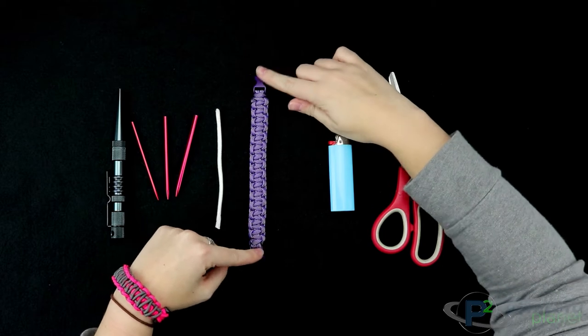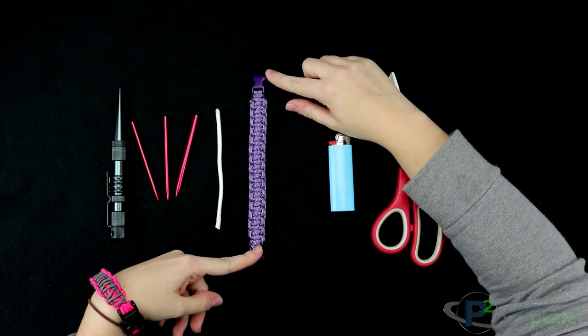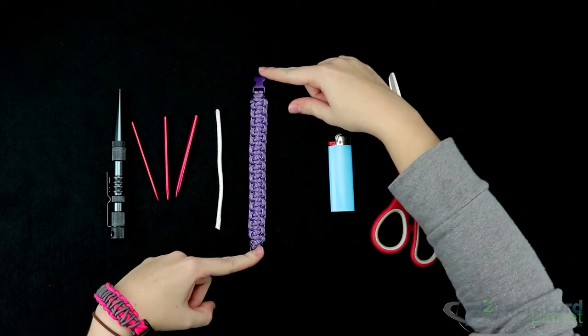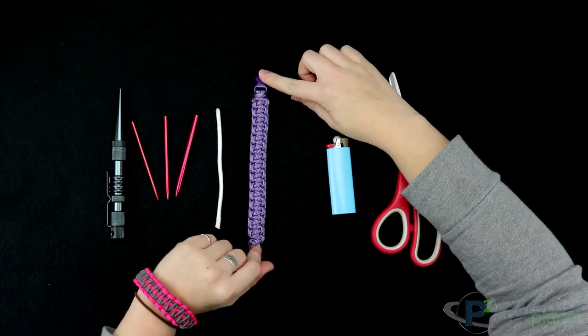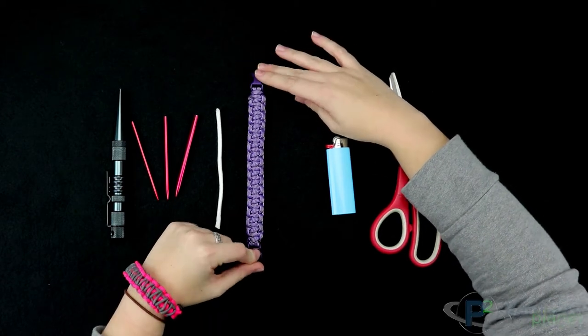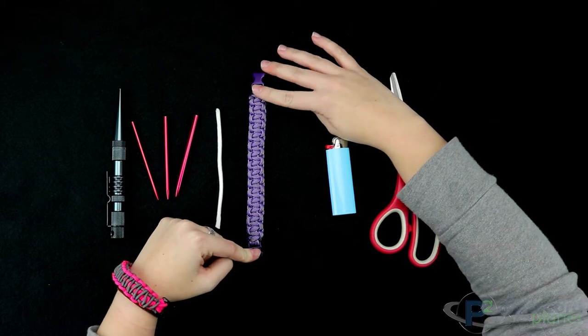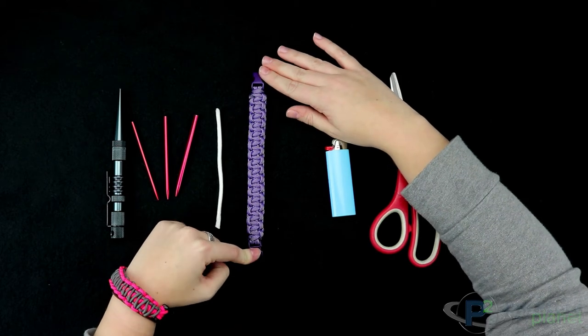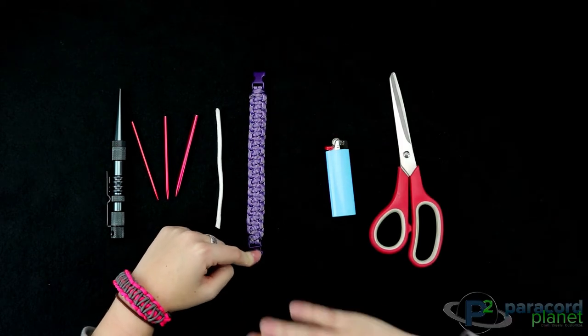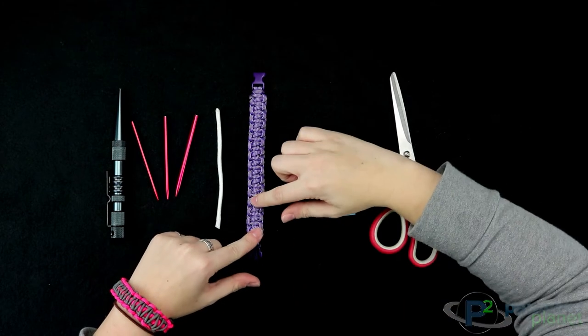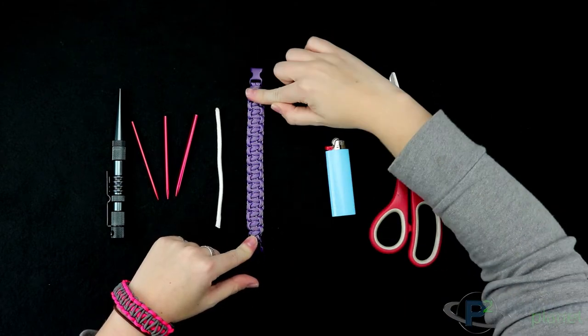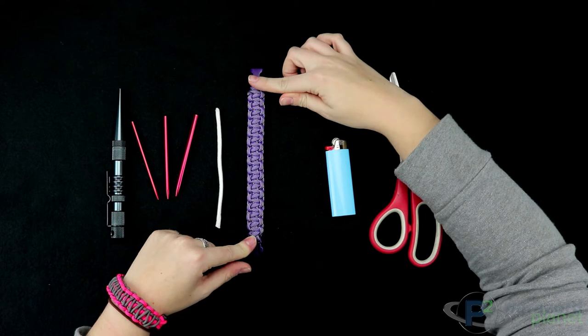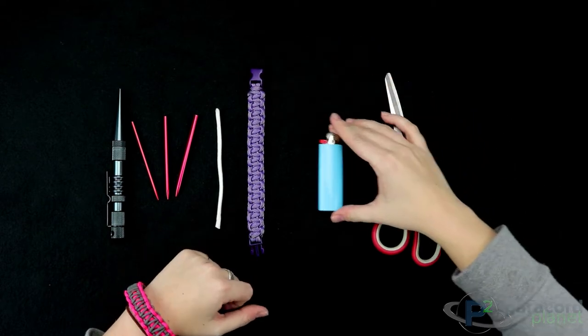Next, you're going to need a fully finished cobra weave bracelet. The cobra weave is a very easy weave. I'm sure a lot of paracord enthusiasts know about it already. We do have a tutorial about the cobra weave. If you're not familiar, you can go ahead and check it out on our channel. You're going to want to make sure that the bracelet is woven tight for this tutorial.